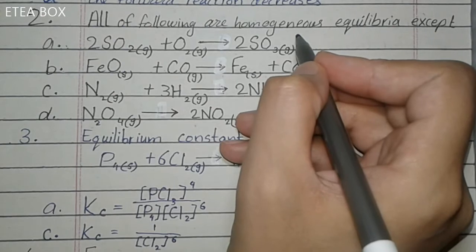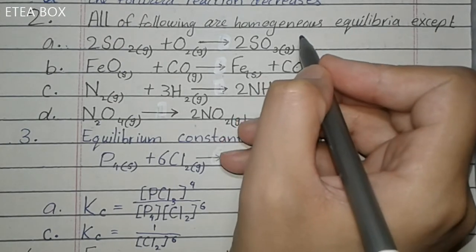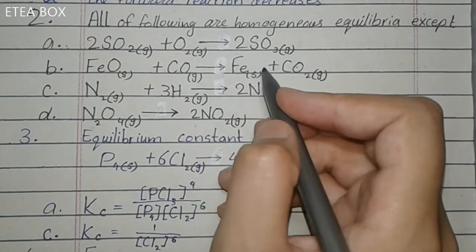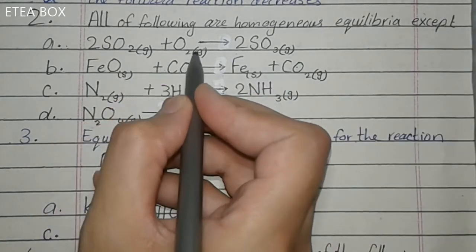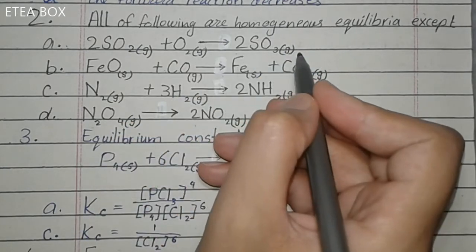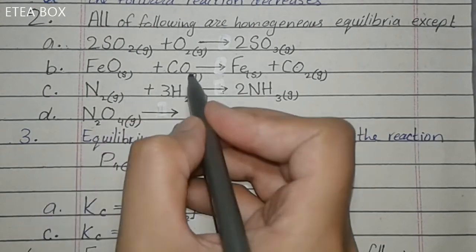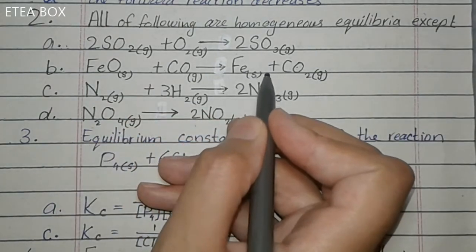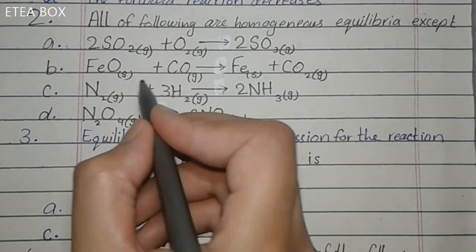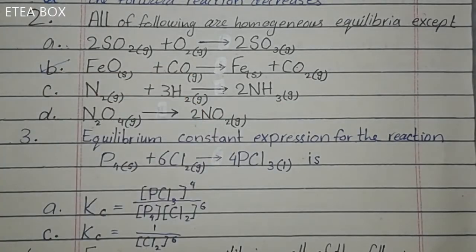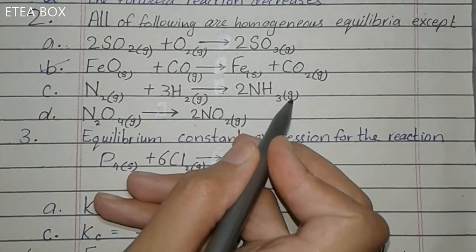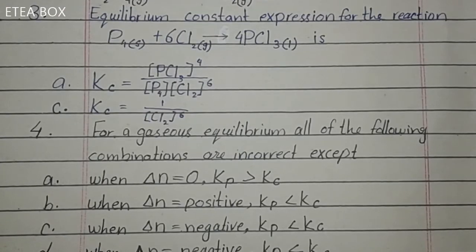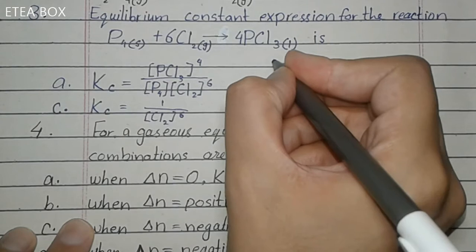Next: all of the following are homogeneous equilibrium except. Homogeneous equilibrium is one in which all the components of the reaction occur in one phase. Here SO₂ is gaseous, O₂ is gaseous, and SO₃ is gaseous — not the exception. But FeO is solid, CO is gaseous, Fe is solid, CO₂ is gaseous — so this is heterogeneous equilibrium because all components do not occur in the same phase. So option B is the exception. Options C and D are all in the gaseous phase.